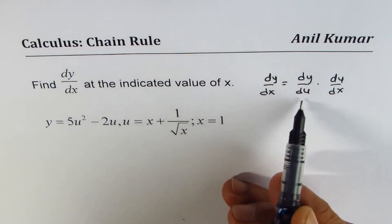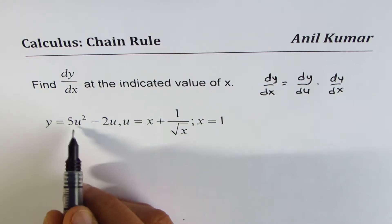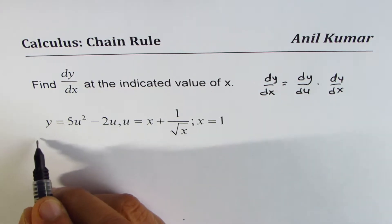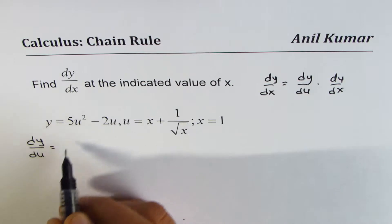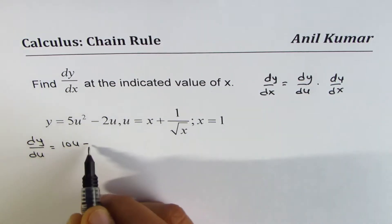So let's find what is dy/du. So y is 5u squared minus 2u. So we can write here dy/du is equal to 10u minus 2.